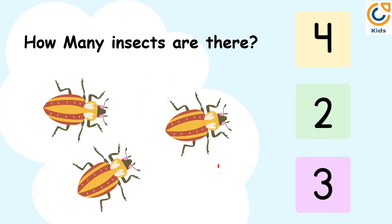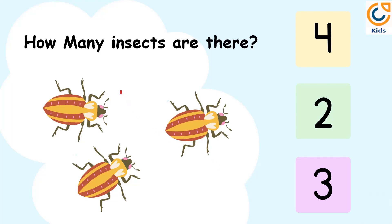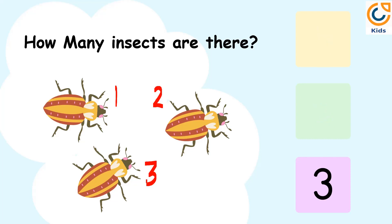How many insects are there? Let's count the number of insects. 1. 2. 3. There are 3 insects. So, the answer is 3.